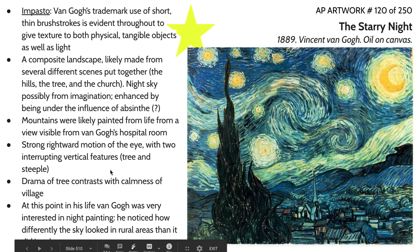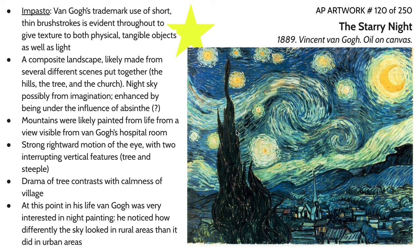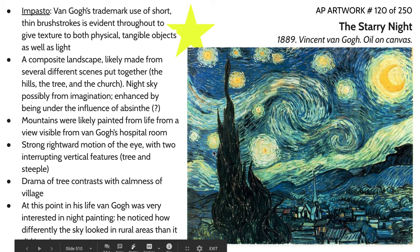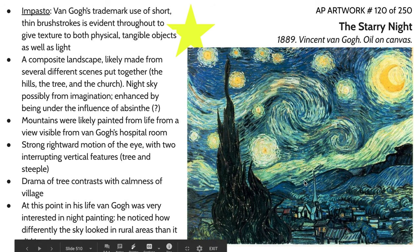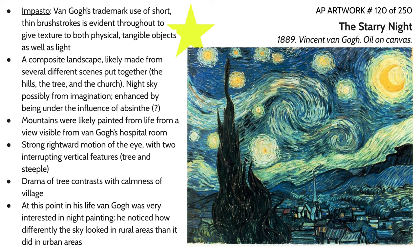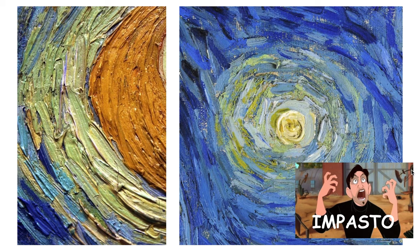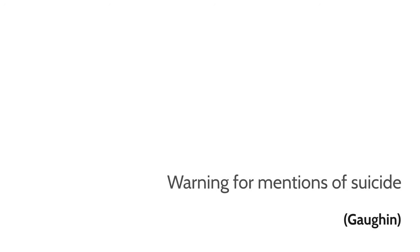Van Gogh is also creating drama with two sharp verticals: a dramatic almost flame-like cypress tree in the foreground — he's particularly famous for these dramatic tall trees — and a strong upward motion echoed in the steeple of the church. There are also horizontal elements: the Milky Way swirling left and right across the piece, and brushstrokes carrying the eye from left to right. Impasto is the great word to remember for this painting.